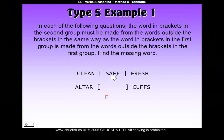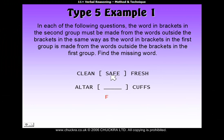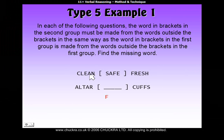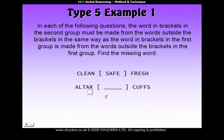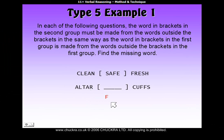Then we look at the second letter of 'safe' to find the second letter of our answer. The second letter of 'safe' is an A, and the only A in either 'clean' or 'fresh' is in 'clean', at the fourth position in the word on the left. So we come down and look at 'alter', the word on the left, and find the fourth letter, which is also an A. So the second letter of our answer is A.